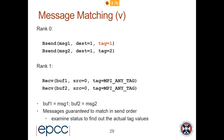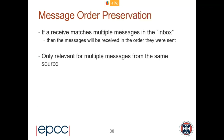With wildcard tag receives, buffer 1 gets message 1 and buffer 2 gets message 2. You can check the status to find out the actual tag values to determine what's in each buffer. If a receive matches multiple messages in the inbox, messages will be received in the order they were sent — this is only relevant for multiple messages from the same source, because message order is not preserved across the network, only between two particular points.